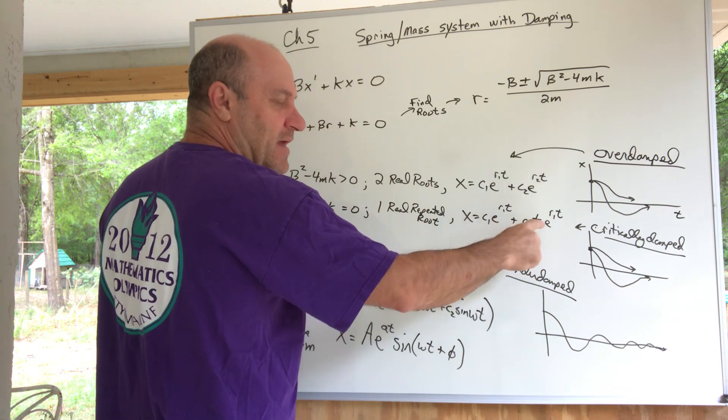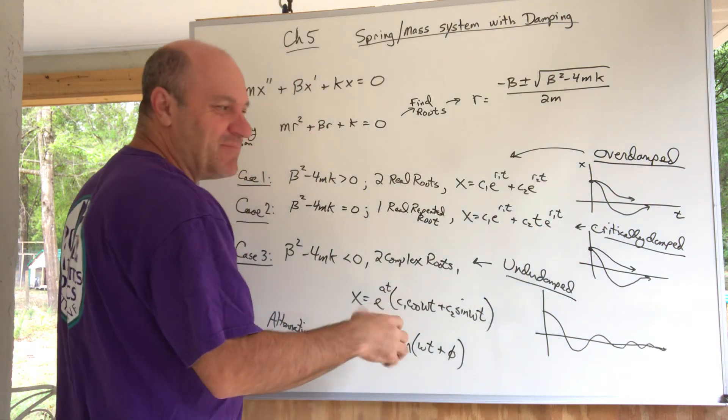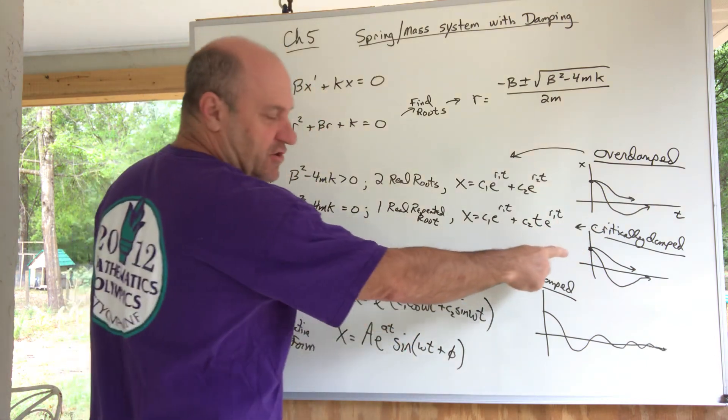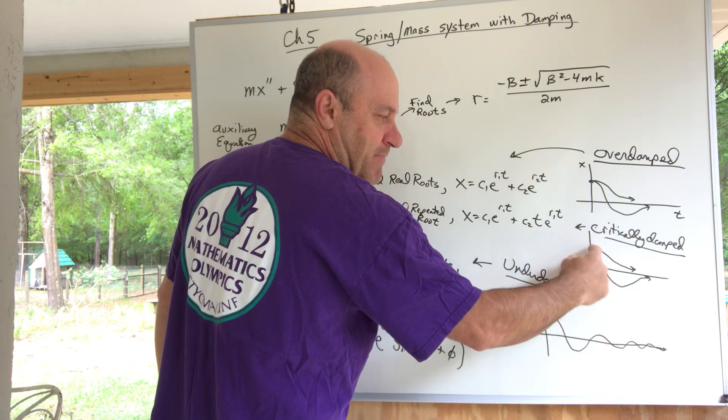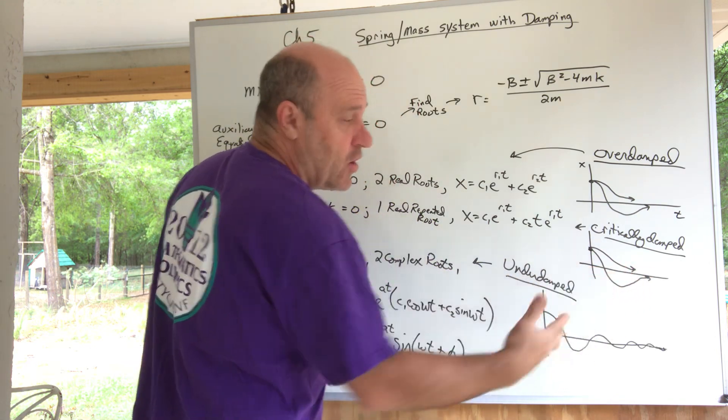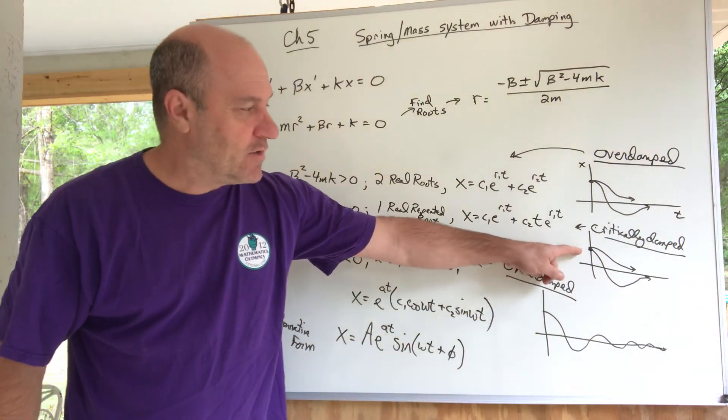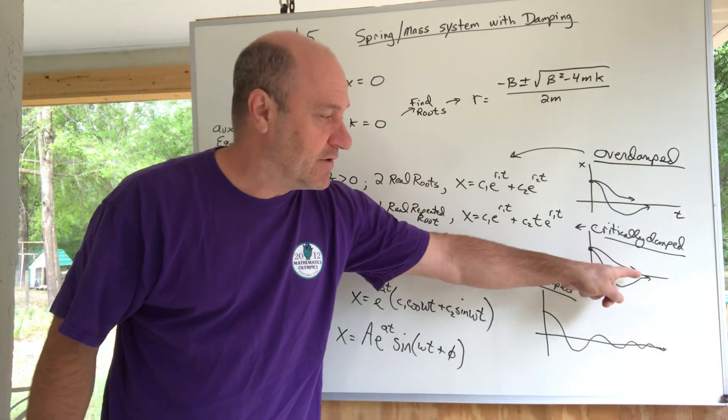That's called critically damped, and the resulting graph could be the same situation actually. Maybe it passes through equilibrium one time but never again, or it never passes through equilibrium—it never gets back to equilibrium. Critically damped.